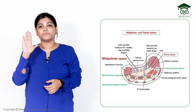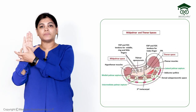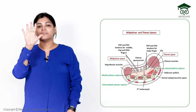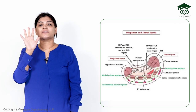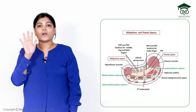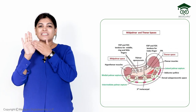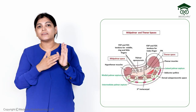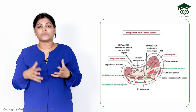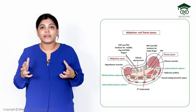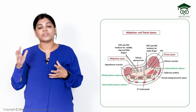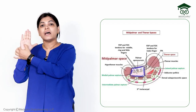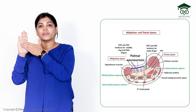Coming to the boundaries of the mid palmar space: anteriorly, it is bounded by the palmar aponeurosis. The palmar aponeurosis covers the whole hand musculature, providing protection to the muscles, digital nerves, and vessels from trauma. The medial part of the palmar aponeurosis forms the anterior boundary of the mid palmar space.